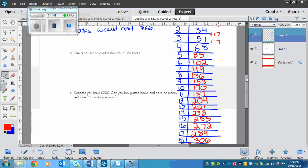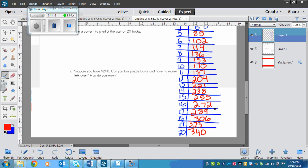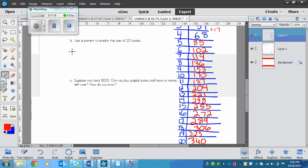So we've got $85, $102, $119, continuing on down to 20 books, which would be $340. So 20 books would cost $340.